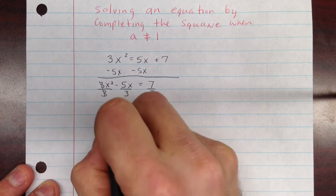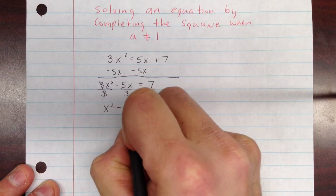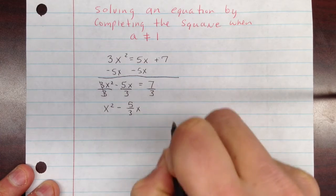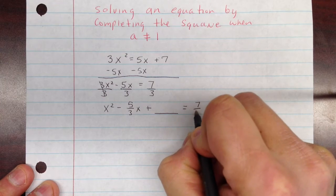That cancels here, and we get x squared minus 5 thirds x. This is where I usually put the blank in, plus blank, equals 7 thirds.